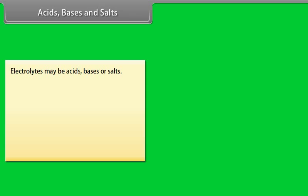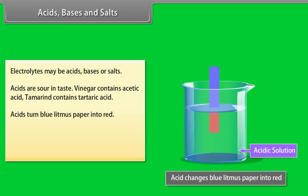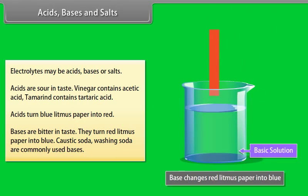Electrolytes may be acids, bases, or salts. Acids are sour in taste — vinegar contains acetic acid and tamarind contains tartaric acid. Acids turn blue litmus paper into red. Bases are bitter in taste and turn red litmus paper into blue. Caustic soda and washing soda are commonly used bases.